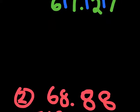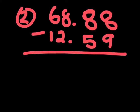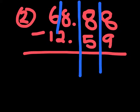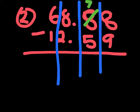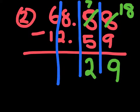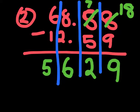Let's go on to our next question. So let's break this up into 4 columns as usual, then do our subtraction. 8 minus 9 — wait, we can't do 8 minus 9 because 8 is smaller than 9. So we have to borrow from the second 8. This 8 becomes a 7, and now this 8 becomes an 18. Now we can do our subtraction: 18 minus 9 is 9. 7 minus 5 is 2. 8 minus 2 is 6. And 6 minus 1 is 5. Then we bring down our decimal point, so our answer for 68.88 minus 12.59 is 56.29.